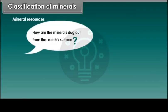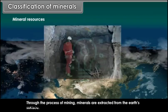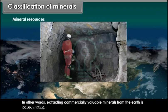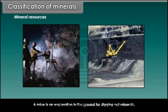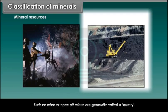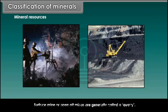The process of separating minerals from their ores by the use of heat is called smelting. Minerals are extracted from the earth's surface through the process of mining. Extracting commercially valuable minerals from the earth is called mining. A mine is an excavation in the ground for digging out minerals — it may be a deep underground mine or close to the surface. Surface mines or open pit mines are generally called a quarry.